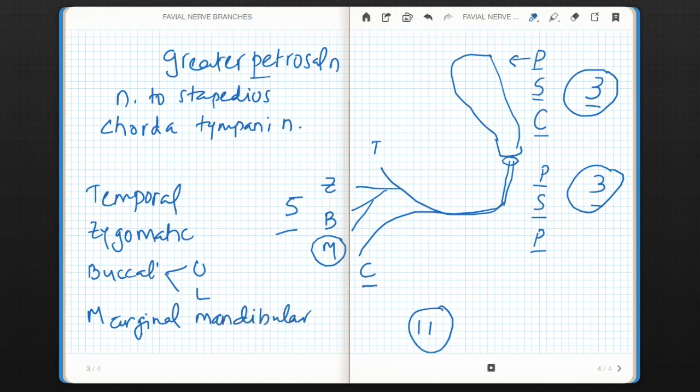And this C stands for cervical. These 5 terminal branches are given within the substance of parotid gland and this will supply almost all the muscles of facial expression. So this is how via these 3 courses it gives 3 plus 3 plus 5 total 11 branches. And with these 3 mnemonics PSC, PSP, and TZBMC you can remember all 11 branches. Hope you understood well, thanks for watching.